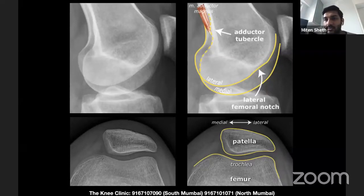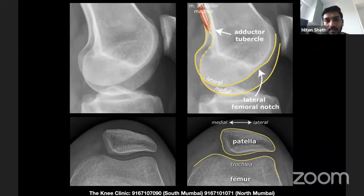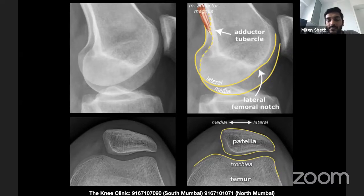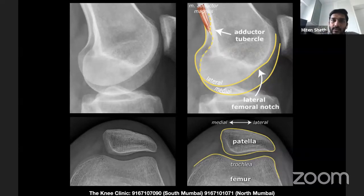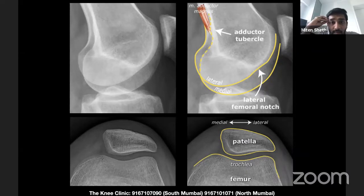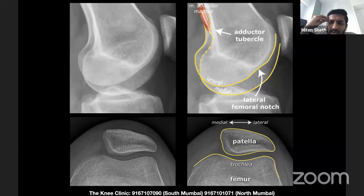On a slightly rotated lateral view, it's imperative to identify which is the medial and which is the lateral femoral condyle. There are two keys: on the posterior cortex, one condyle has a small protuberance called the adductor tubercle, where the adductor magnus attaches — this is only on the medial femoral condyle. The other marker is the lateral femoral notch: a small indentation always present on the lateral femoral condyle, never on the medial one.